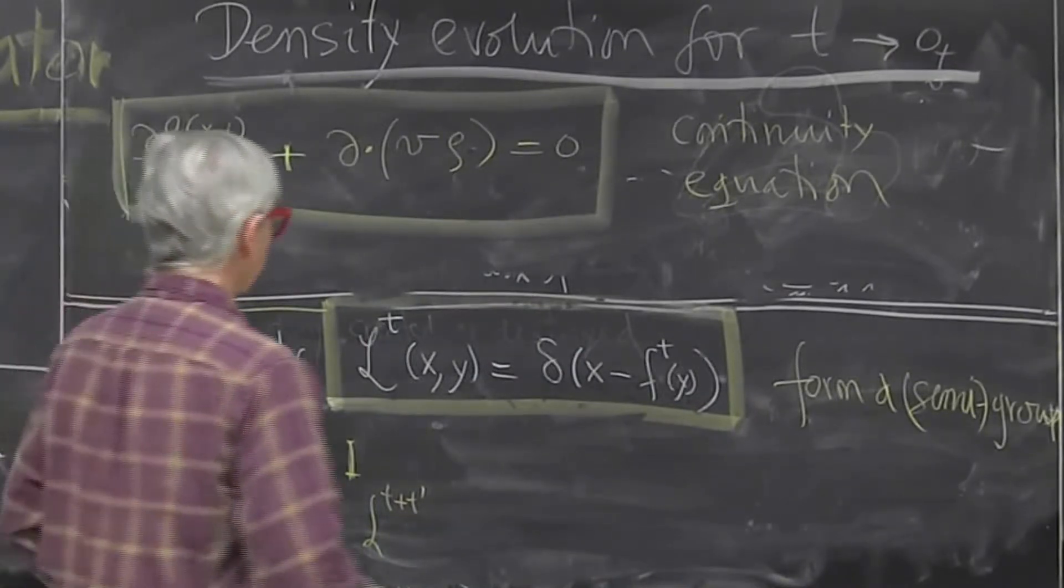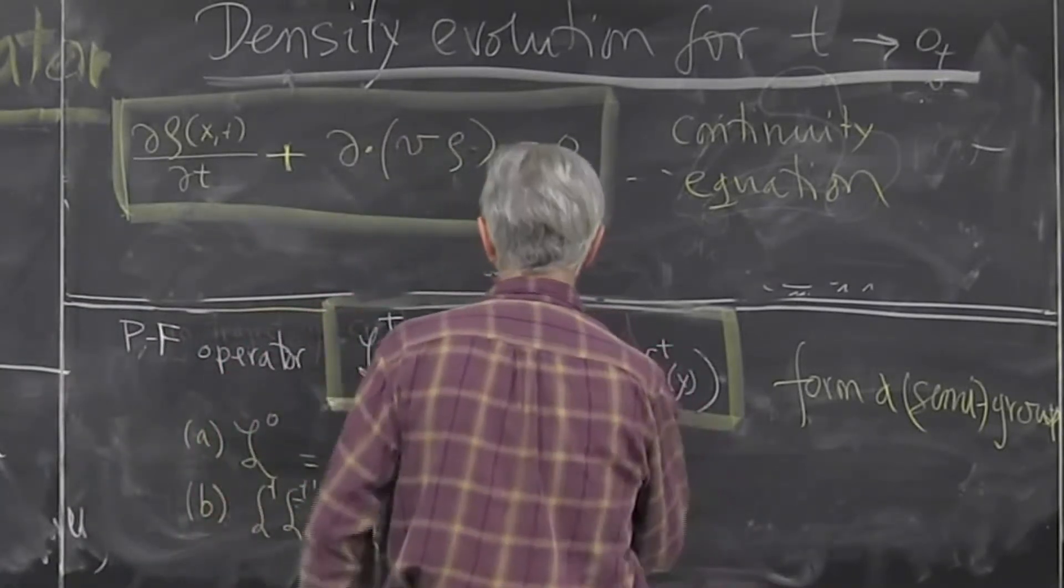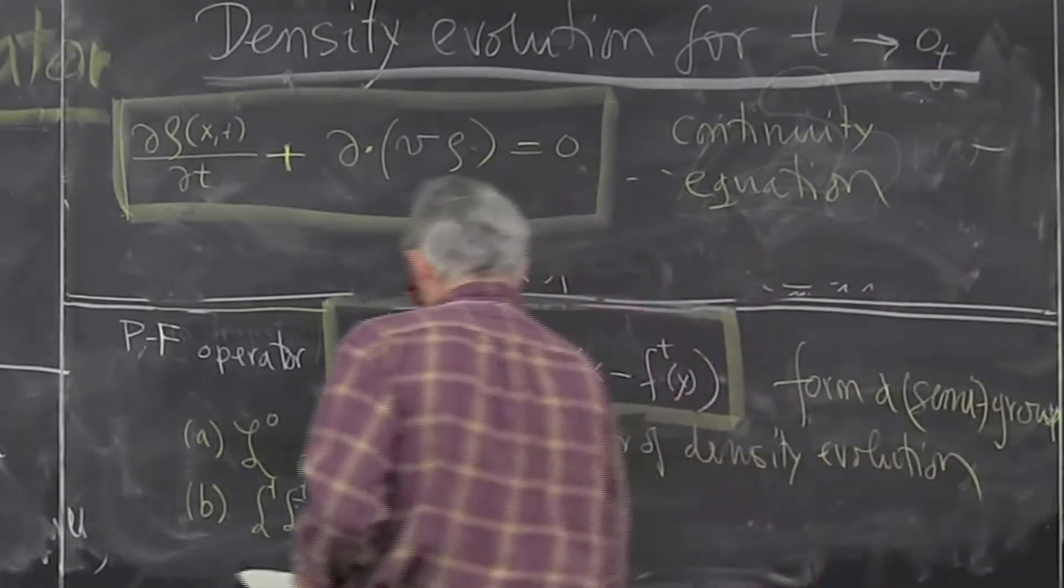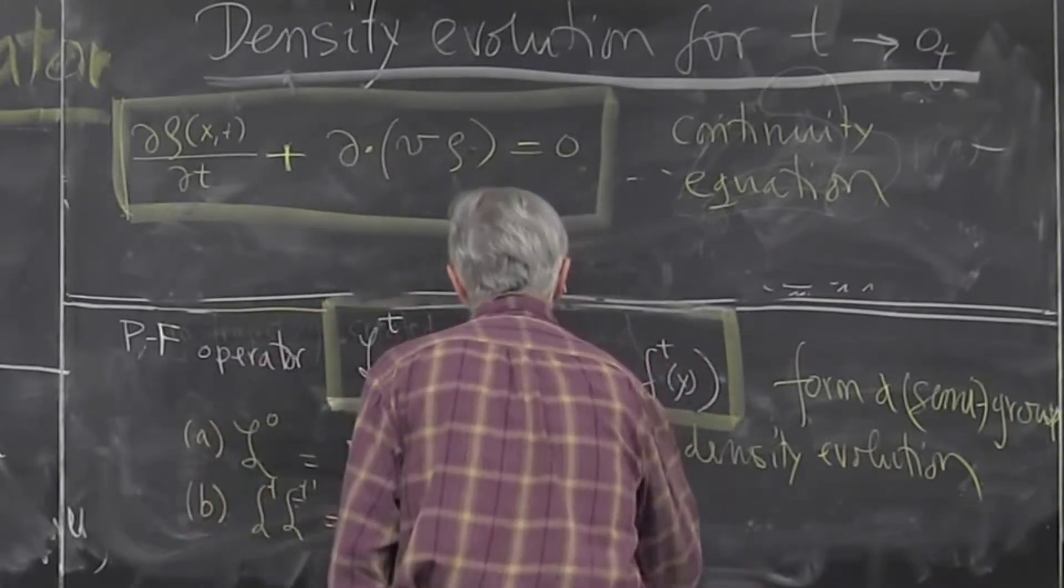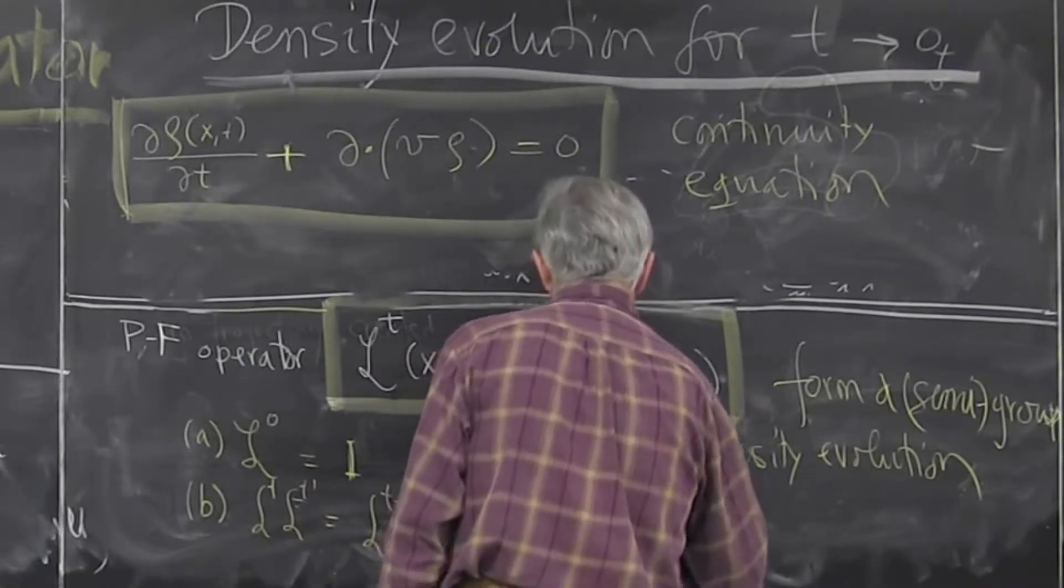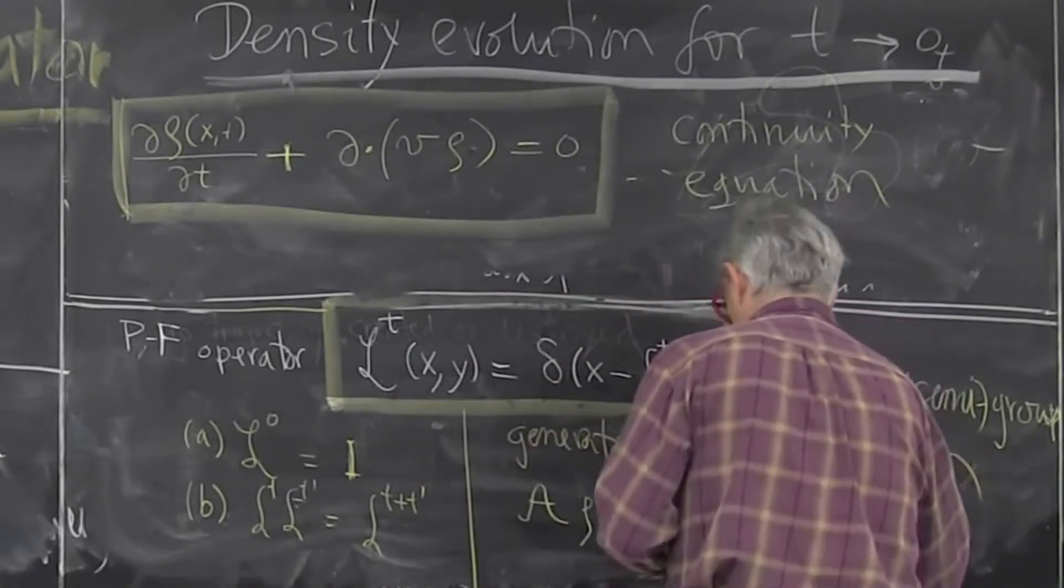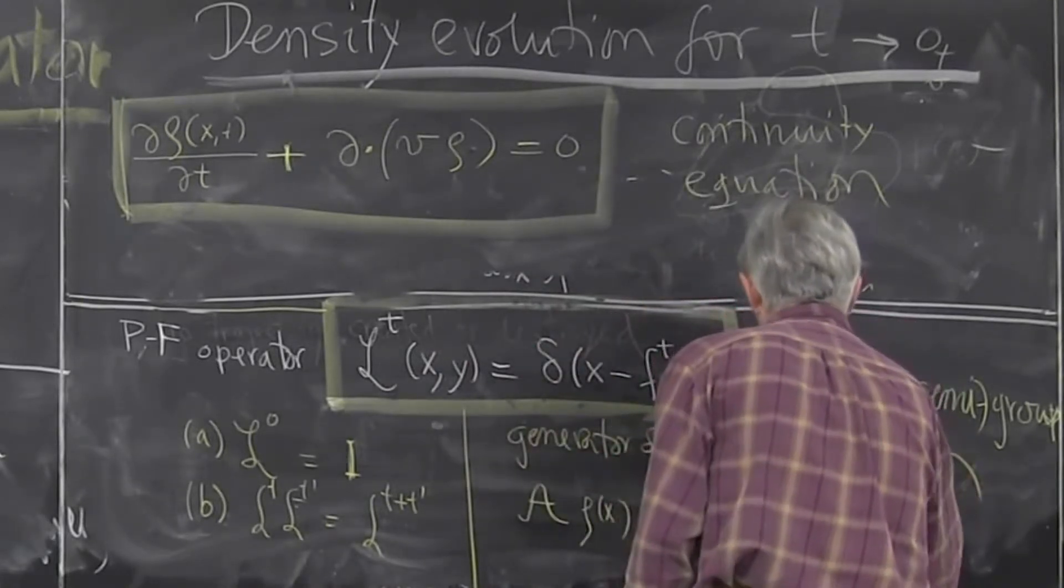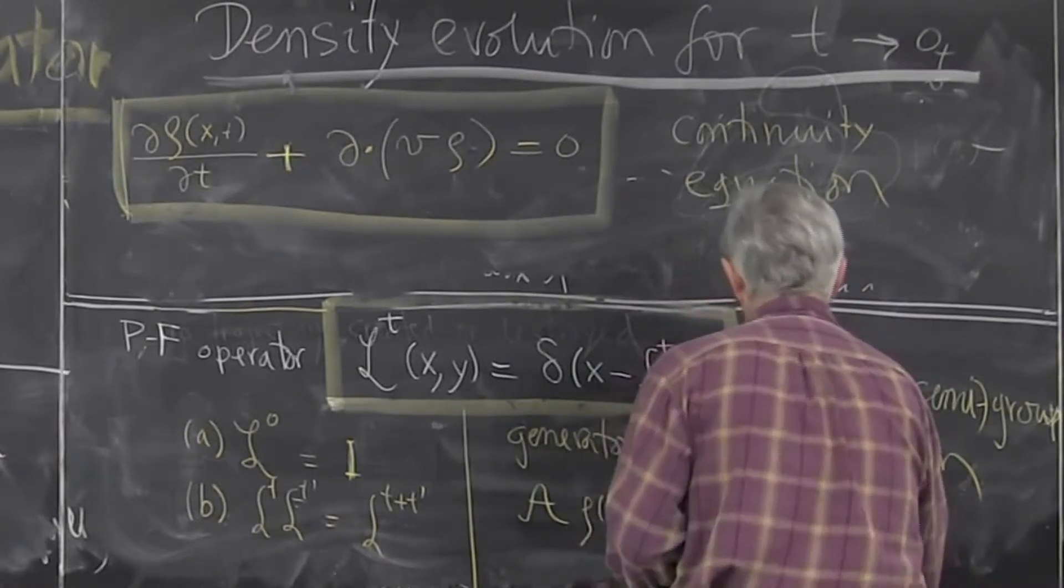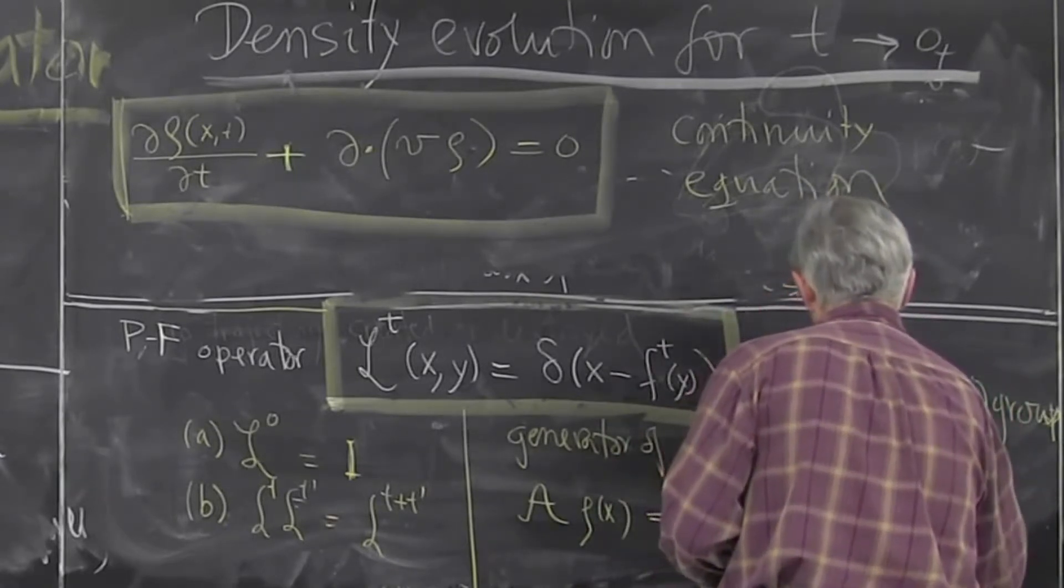And now we can also define an infinitesimal generator. We can write, I'll use some curly A. So curly A acting on x is the limit of delta t, delta t going to 0 plus. So positive increment in time, arbitrarily small.